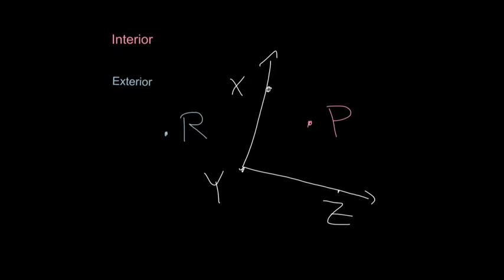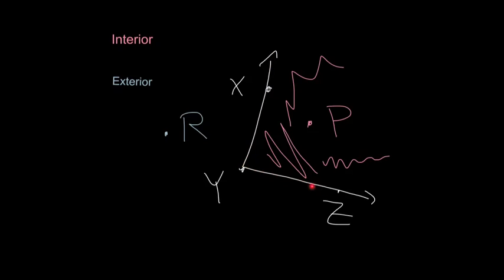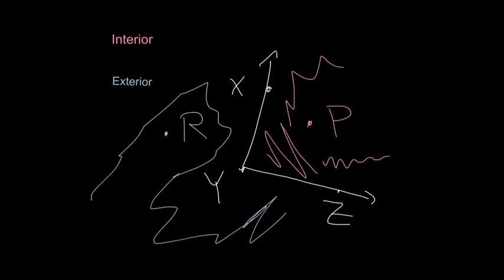Interior and exterior: the interior of an angle is just exactly what it sounds like — the inside of the angle. So all this is the interior of angle XYZ, and we can say that point P is on the interior of angle XYZ. Exterior would be on the outside. All this here is on the exterior of the angle, and point R is on the exterior of angle XYZ.